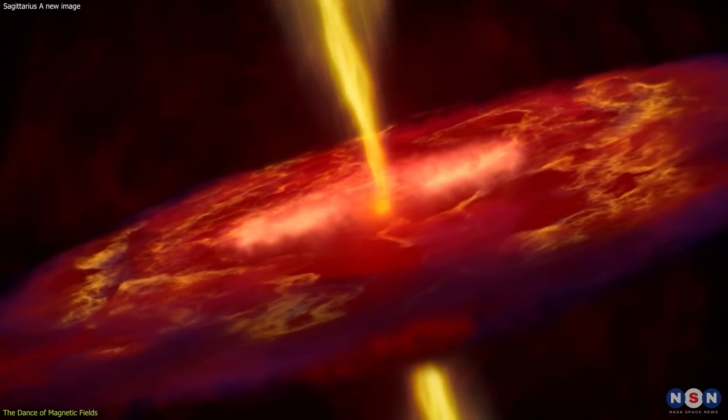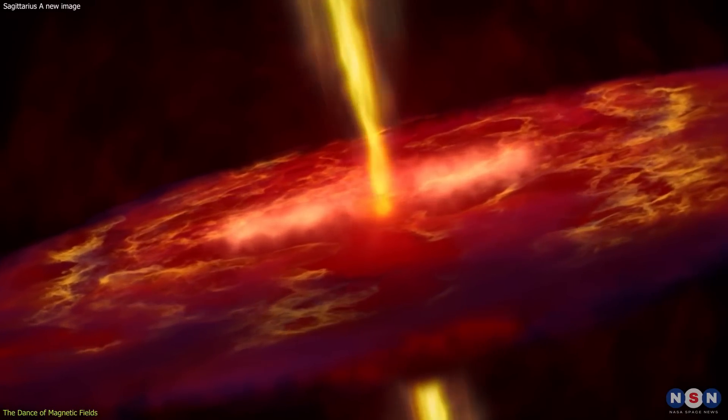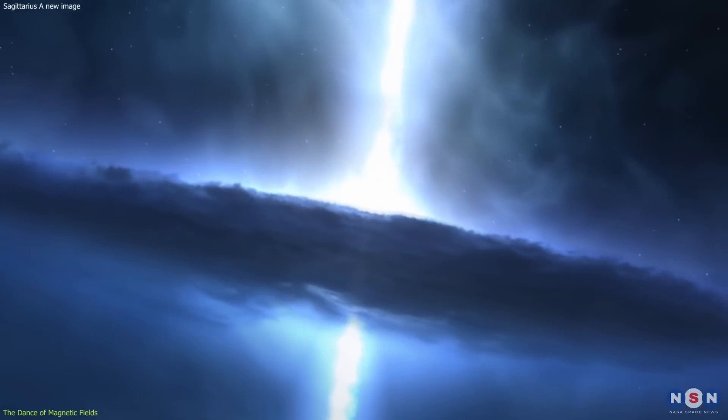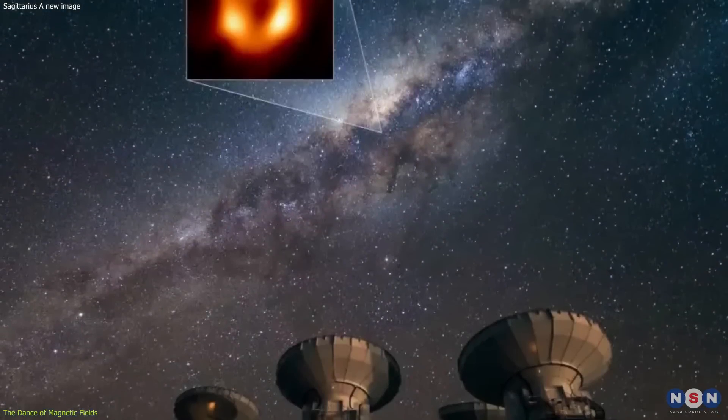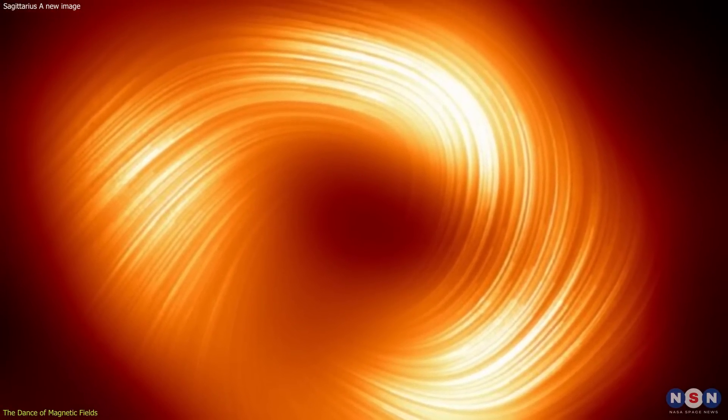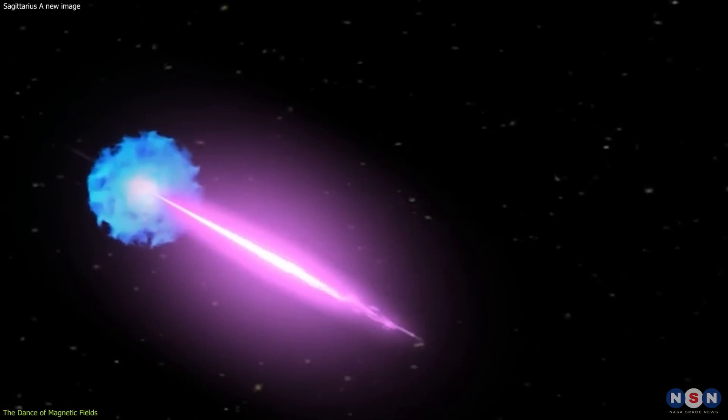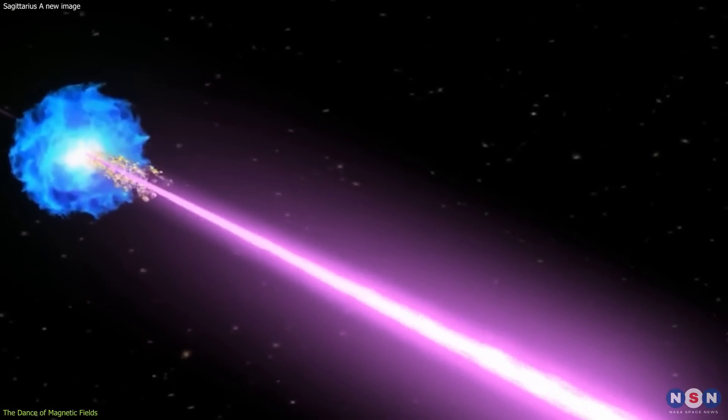Jets, colossal streams of matter ejected at near-light speeds, are one of the most spectacular phenomena associated with black holes. The Event Horizon Telescope's findings suggest that these magnetic fields might be the architects of such jets, channeling matter and energy into these cosmic fire hoses.